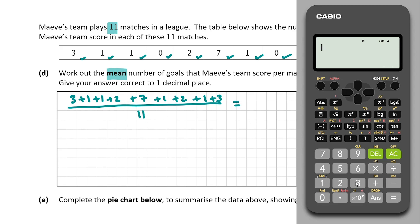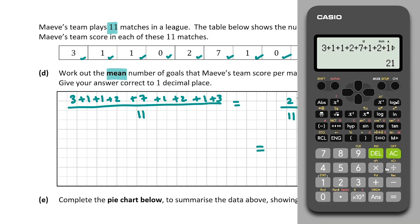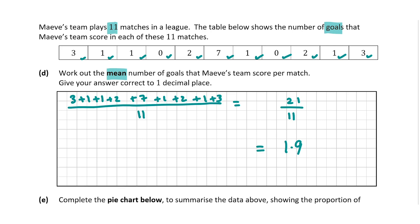Adding those up: three plus one plus one plus two plus seven plus one plus two plus one plus three gives us 21, over 11. Dividing 21 by 11 gives us 1.9. So the mean is 1.9 goals per match, which is already in the correct form to one decimal place. For this question you get 10 marks.